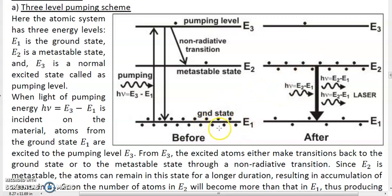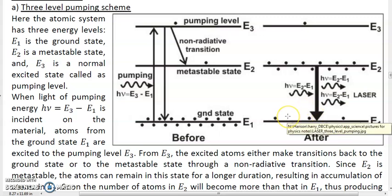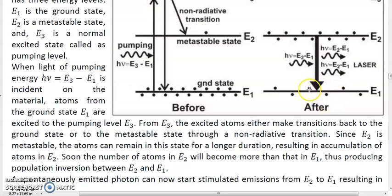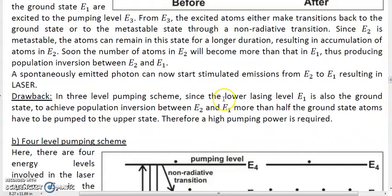For example, if there are 100 atoms initially all in the lower level, to achieve population inversion we need at least 51 atoms taken up to E2 so that only 49 remain in E1. This means more than half the ground state atoms must be moved to the metastable state, which requires a huge amount of energy. This is the drawback of the three-level pumping scheme: it requires very high pumping power because the lower lasing level is the ground state. In the four-level pumping scheme, which we will discuss next time, this drawback is removed.